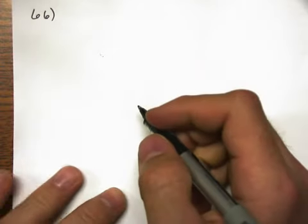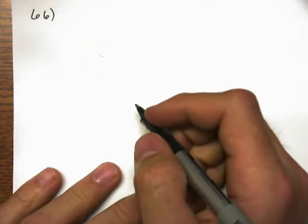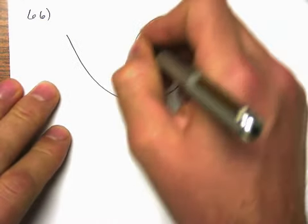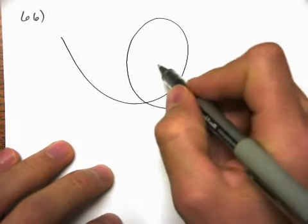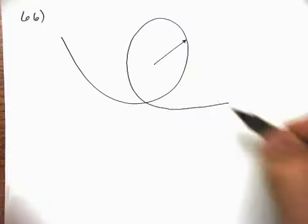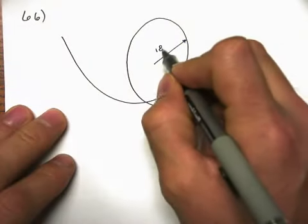All right, so number 66 is the last problem, and it says that there's a carnival clown rides a motorcycle around a ramp, a loop-de-loop, and the radius of the loop-de-loop is 18 meters.